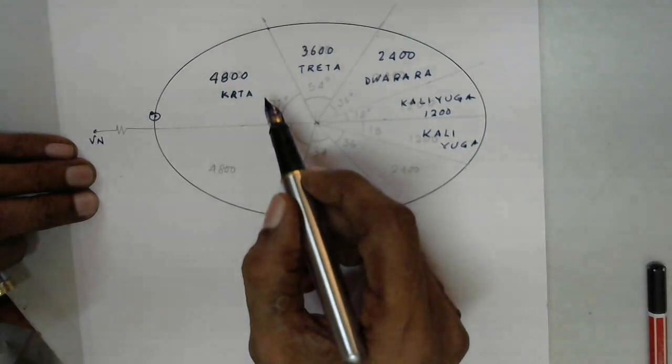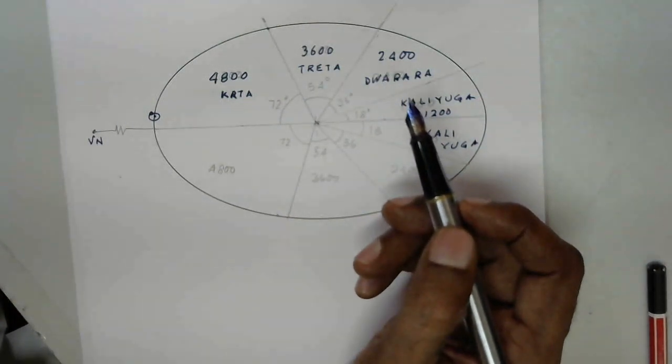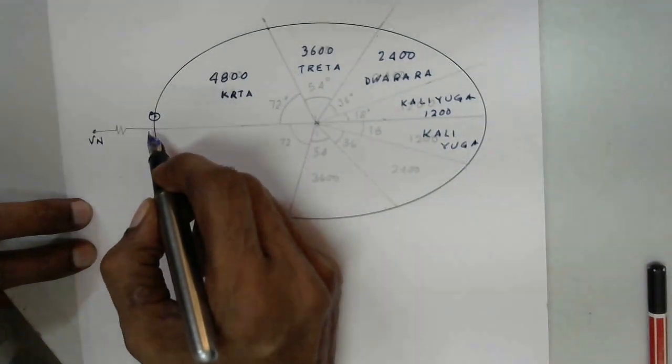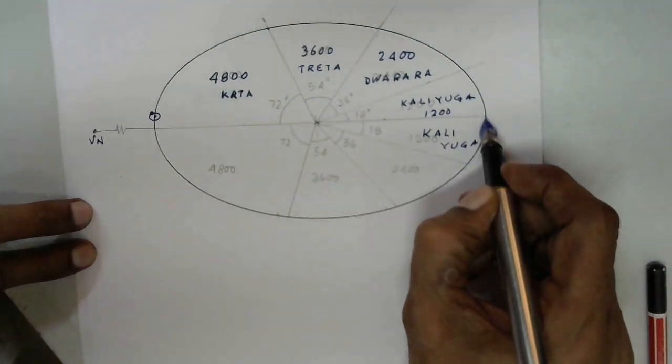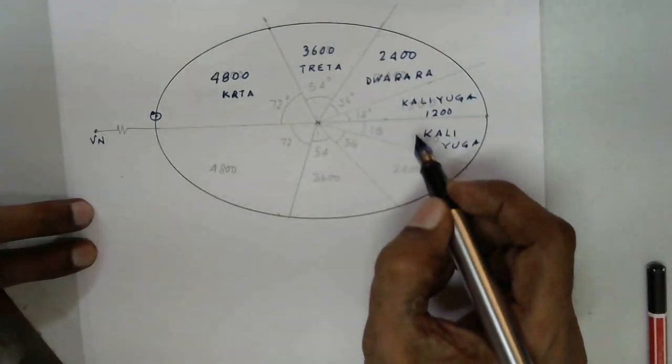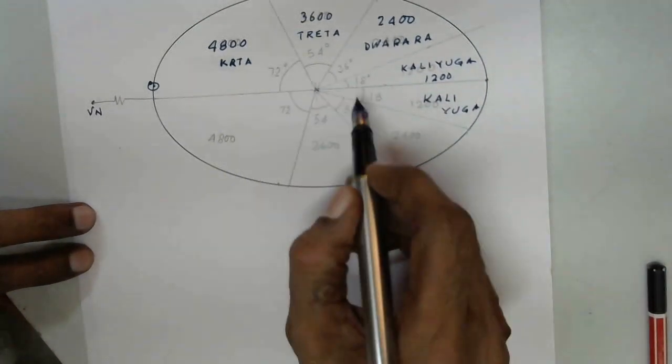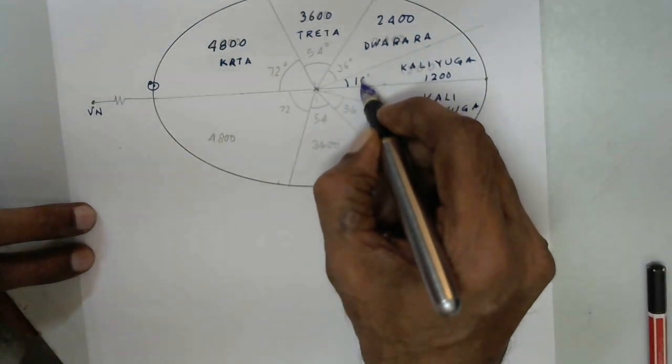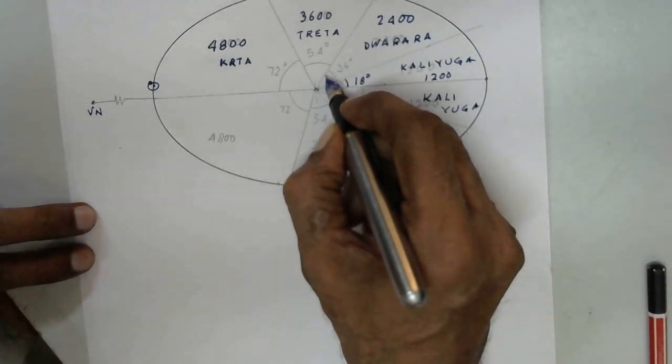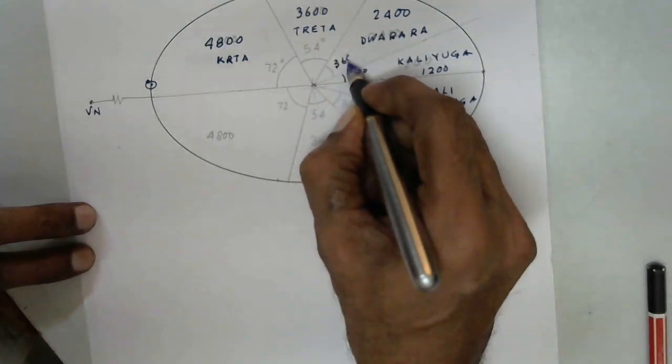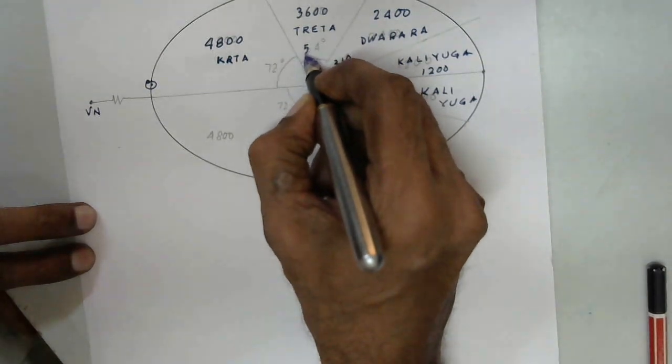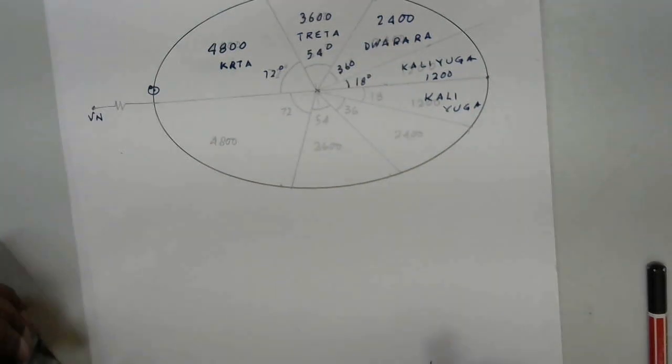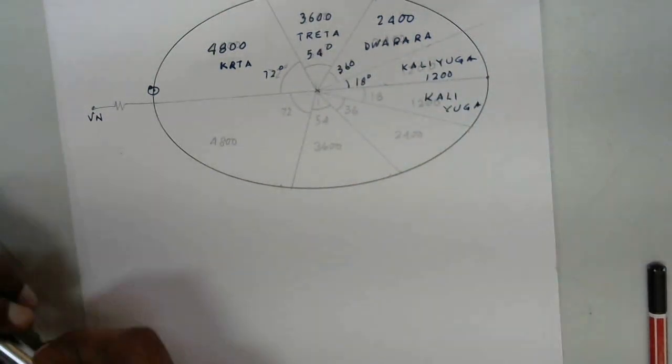If you see this it totally takes about 12,000 years total movement from the nearest point to the Vishnu Nabhi to the farthest point. 12,000 divided by 180 gives 18 degrees, then next one would be 36 degrees, this will be 54 degrees, and this is 72 degrees.